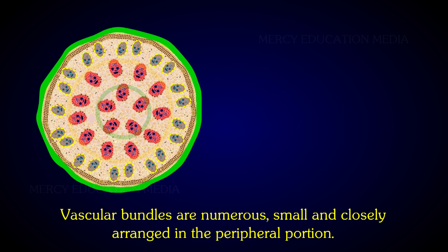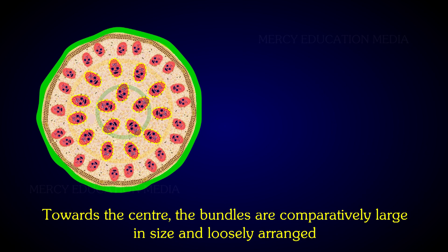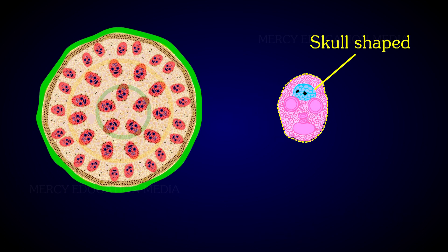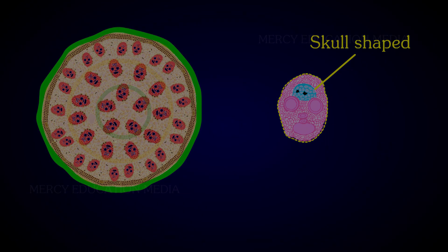Vascular bundles are numerous, small, and closely arranged in the peripheral portion. Towards the center, the bundles are comparatively large in size and loosely arranged. The vascular bundles are skull-shaped.